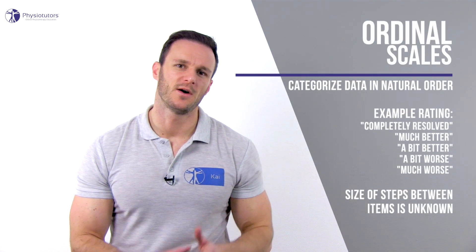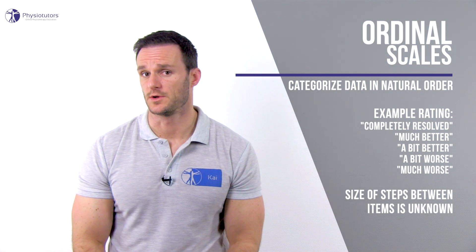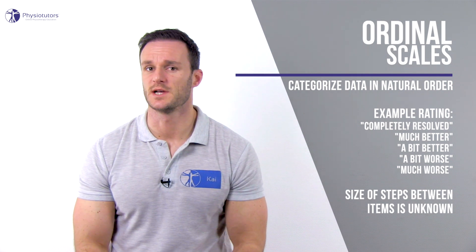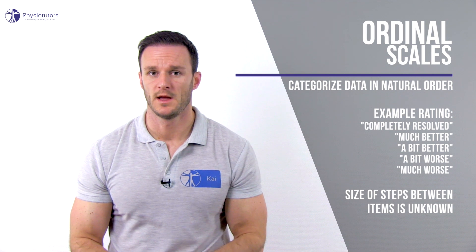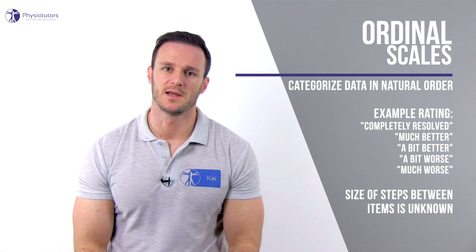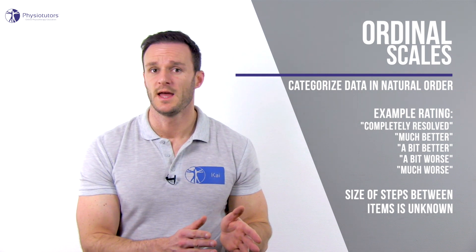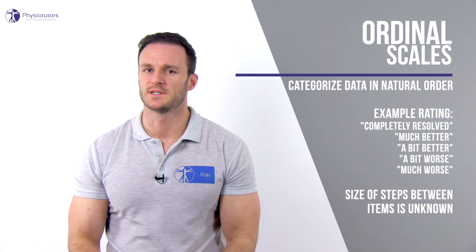Ordinal scales can be used to also categorize data, but now there is a natural order. The word ordinal already indicates that there is an order. After physiotherapy treatment, the patient might for example rate his condition as completely resolved, much better, a bit better, a bit worse, or much worse. Be aware that we cannot really quantify if the difference between completely resolved and much better is as big as a bit worse or much worse, for example. So the size of the steps in between categories is unknown.